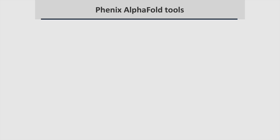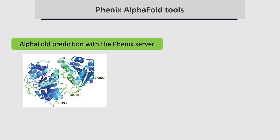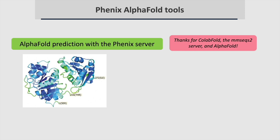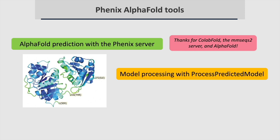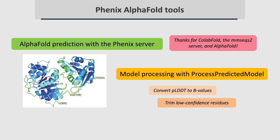Phoenix has tools to carry out all the steps in Structure Determination with AlphaFold using x-ray data or cryo-EM maps. The Phoenix server, which you can run from the Phoenix GUI, uses AlphaFold to predict the structure of your protein. This server is partly based on CoLabFold and uses the MMSeqs2 server as well as AlphaFold. The Process Predicted Model tool will convert the AlphaFold PLDDT values, which are saved in the B value field of the model, into corresponding B values, then trim off low confidence parts and separate the model into domains.